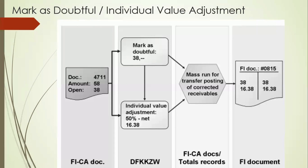That amount needs to be cleared. This is based mostly on the policies of the government or the utility company — how much amount needs to be adjusted. We first identify the open item, which we call the doubtful item. The doubtful amount is identified as 38, and as per policy we can adjust up to 50%, which is 16.38. The calculation is done: 38 with 16.38 applied, so the final document gets posted by subtracting that and creating the adjustment amount.